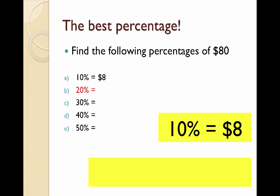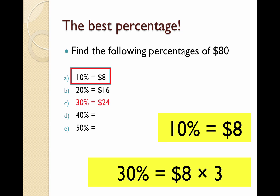Well, 20% is just 2 lots of whatever 10% is, or 2 lots of $8, so 20% is $16. 30% is the same thing—I can find 10% and times it by 3 to get $24. Same with 40%: 4 lots of $8 gives me $32.